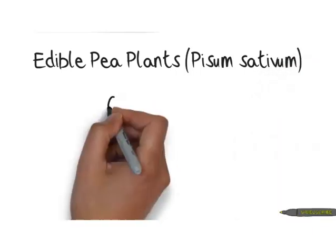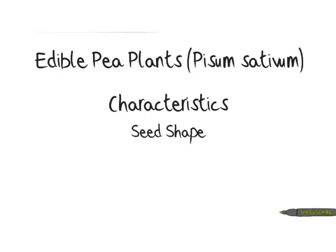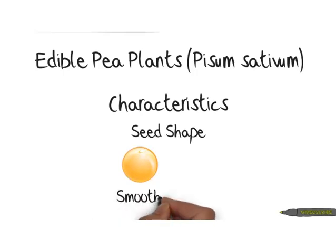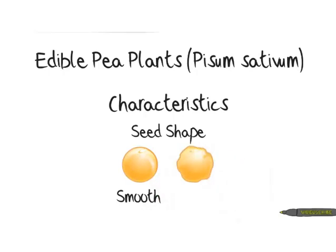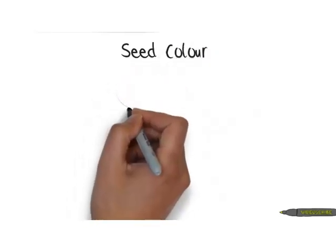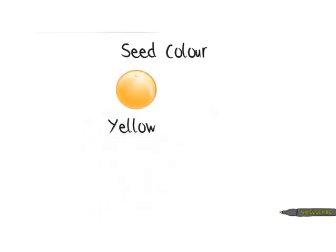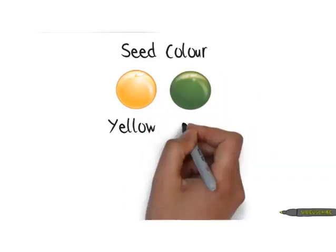He did all his work with edible pea plants, and they had a number of characteristics which he looked at. One of these was seed shape, and he looked at the alternatives of smooth seed shape and wrinkled seed shape. Another characteristic was seed colour — the seeds were either yellow or green, so the pea plant had two variances in colour.